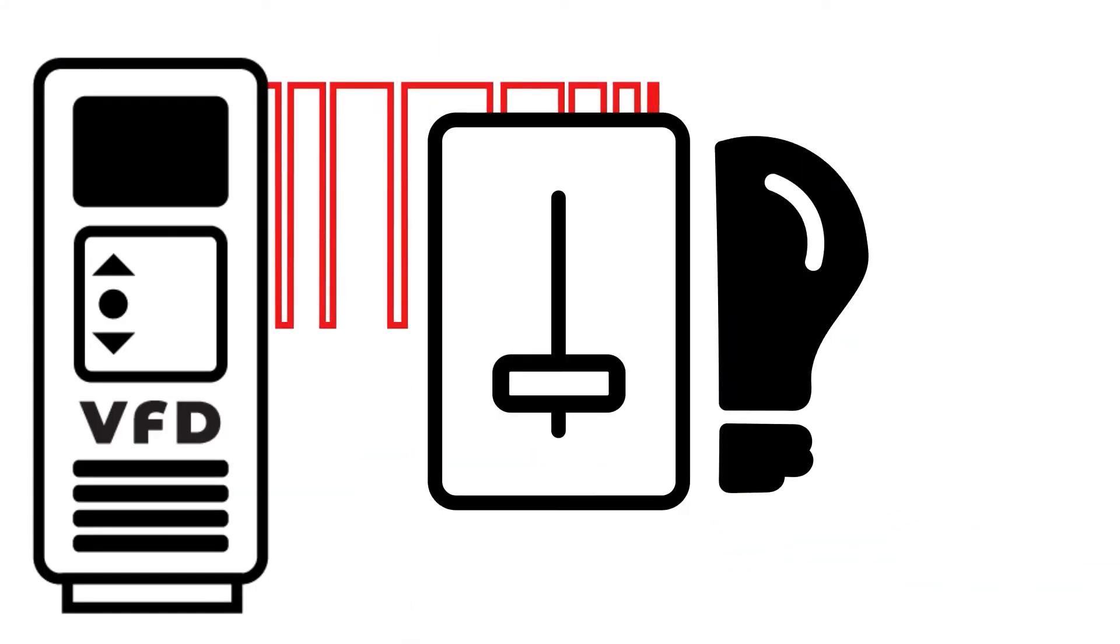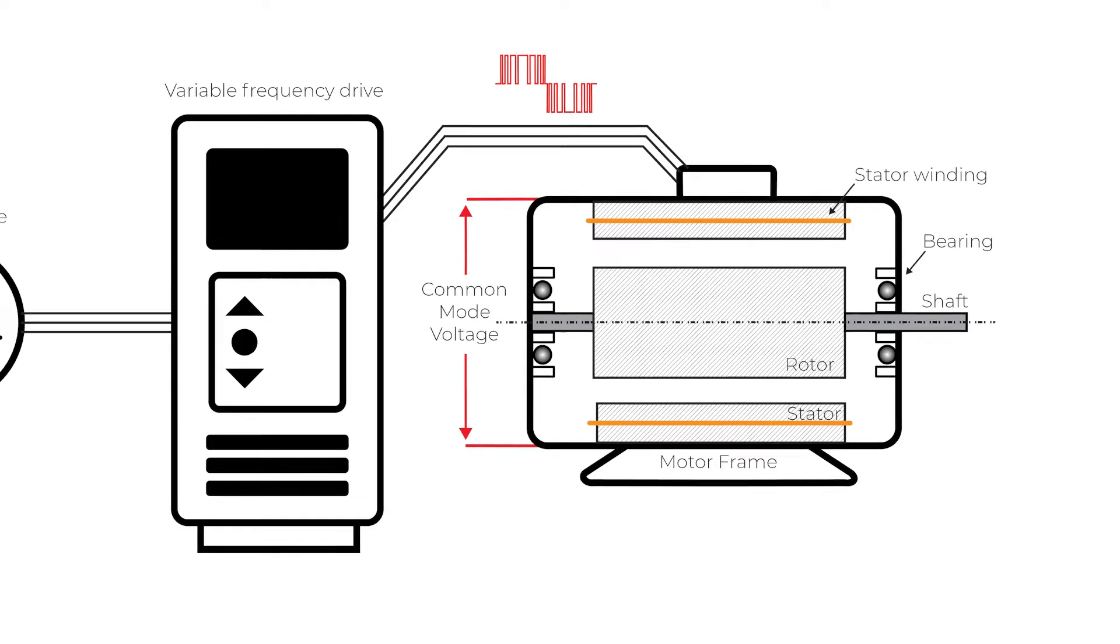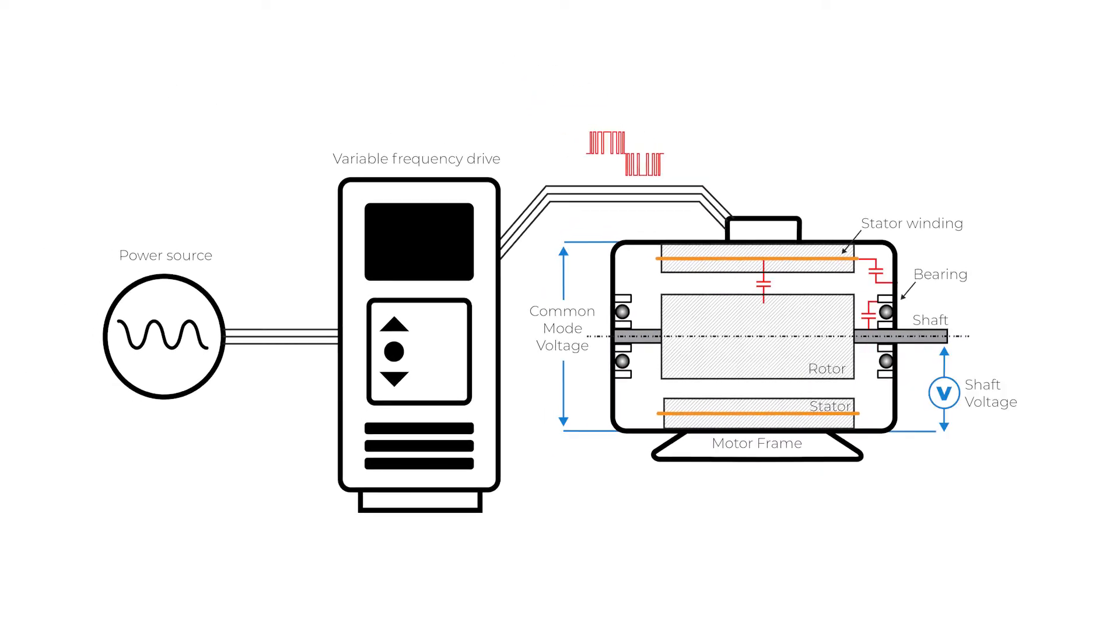Fast switching of the IGBT creates parasitic capacitances in the motor. Common mode voltage and capacitances are sources of a shaft voltage.